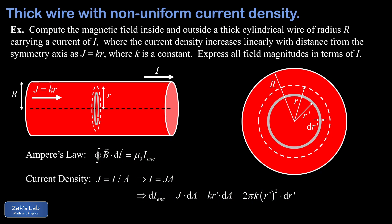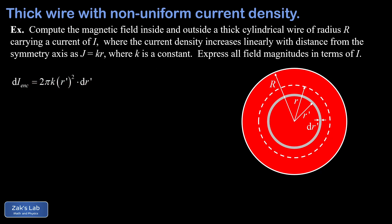So now we have an expression for dI enclosed: moving all constants to the front gives 2π times k, and combining the r primes gives r prime squared times dr prime. We're finally ready to calculate the enclosed current for the right-hand side of Ampere's law. The integral adds up all these continuously changing infinitesimal contributions, so I enclosed equals the integral of dI enclosed, which is the integral of 2πk times r prime squared dr prime.